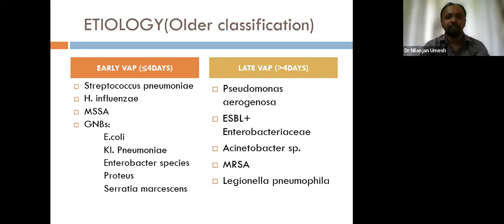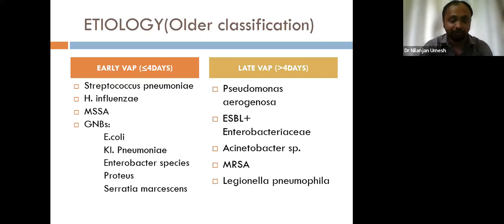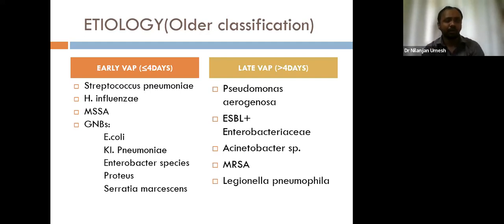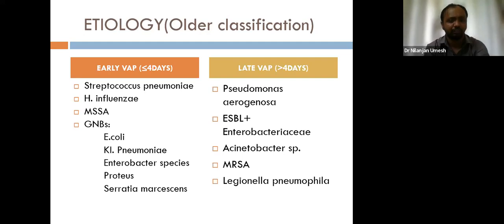Previously, VAP was classified as early VAP — less than four days — and late VAP — more than four days. Early VAP was associated with organisms like Streptococcus pneumoniae, H. influenzae, methicillin-sensitive Staph aureus, and certain GNBs. Late VAP was associated with Pseudomonas, ESBL organisms, resistant Acinetobacter, MRSA, and Legionella. However, recent culture data has shown no significant difference between organisms causing early versus late VAP, so this classification is no longer heavily emphasized.